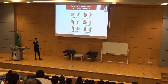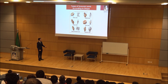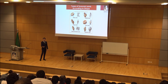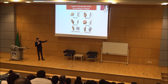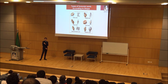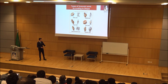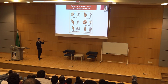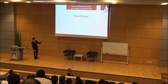Synovial joint subtypes according to shape — there are six: plane, saddle, hinge, pivot, ball and socket, and ellipsoid (also called condyloid). For example, ball and socket: the head of the humerus is ball-shaped and fits into the scapula and clavicle, which act as the socket. Saddle shape is like the saddle you put on a horse or camel.